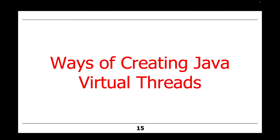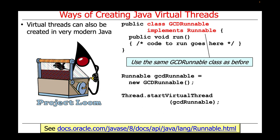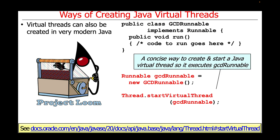We're now going to talk about various ways of creating Java virtual threads. Virtual threads can also be created in very modern Java. In this example, we'll use the same GCDRunnable class as we did for the platform thread discussion. We create a new instance of GCDRunnable, but now we call the startVirtualThread method defined on the Thread class, which is a concise way to create and start a Java virtual thread so it executes the GCDRunnable object.